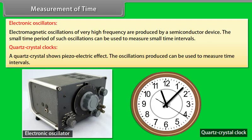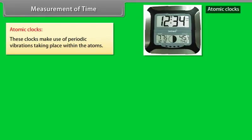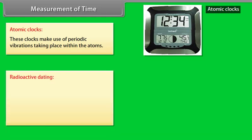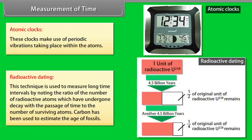The oscillations produced can be used to measure time intervals. Atomic clocks. These clocks make use of periodic vibrations taking place within the atoms. Radioactive dating. This technique is used to measure long time intervals by noting the ratio of the number of radioactive atoms which have undergone decay with the passage of time to the number of surviving atoms. Carbon has been used to estimate the age of fossils.